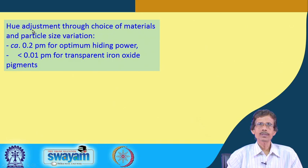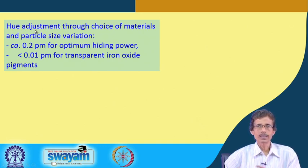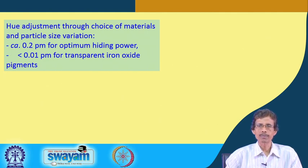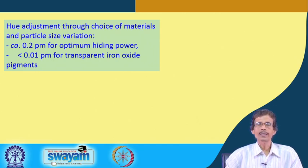Hue adjustment is achieved by mixing pigments. For example, mixing red and blue pigments gives violet. An artist uses primary colors — red, blue, and green — and mixes them to produce secondary and tertiary colors.